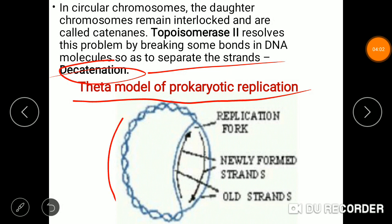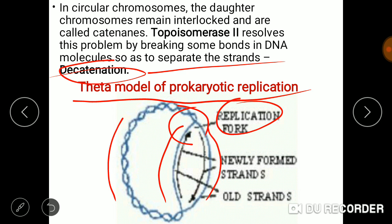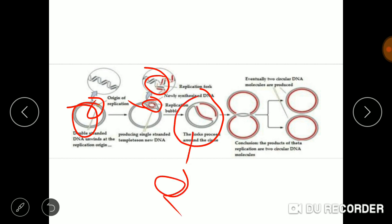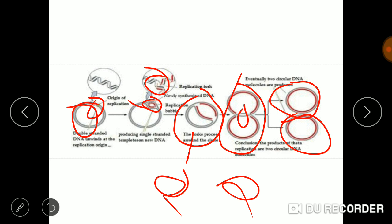Looking at the figure of the theta model: double-stranded DNA has a replication fork — the Y-shaped structure. The old strands are template strands, and newly synthesized strands are formed as intermediates. At the origin of replication, a bubble-like structure forms — the replication bubble. The replication forks are on either side, creating a theta-like shape. The interlocked problems are resolved by topoisomerase II, and two newly synthesized double-stranded DNAs are formed.